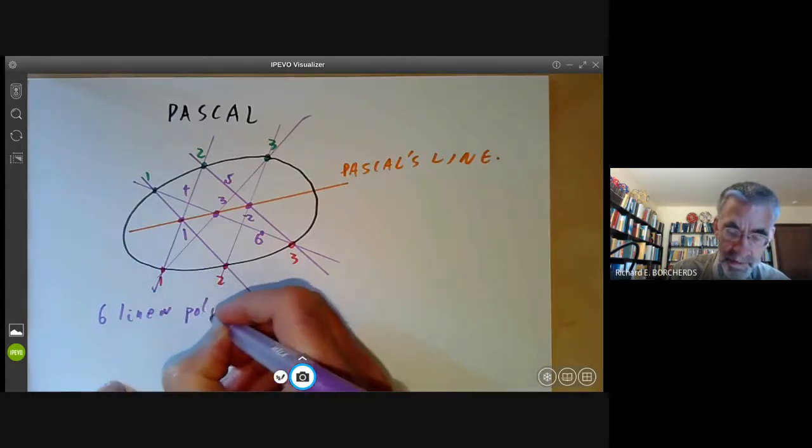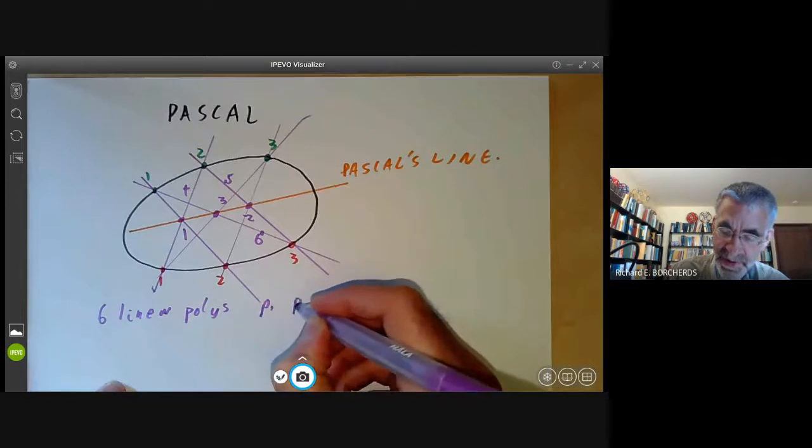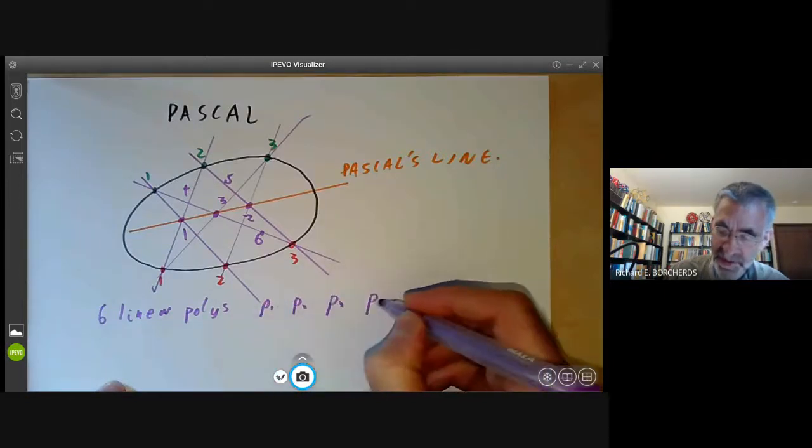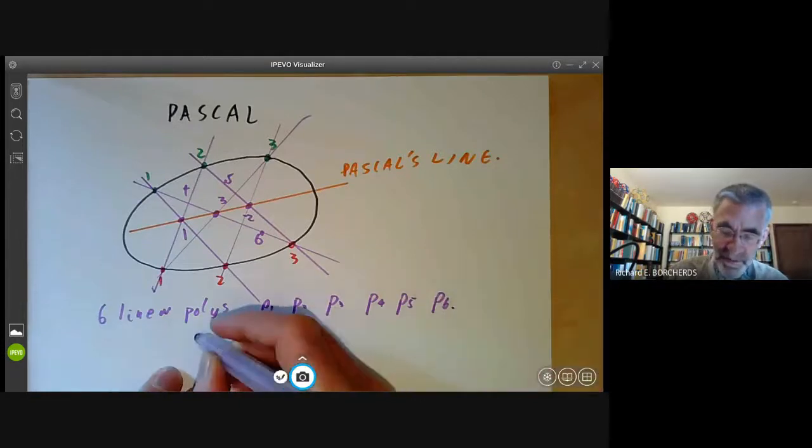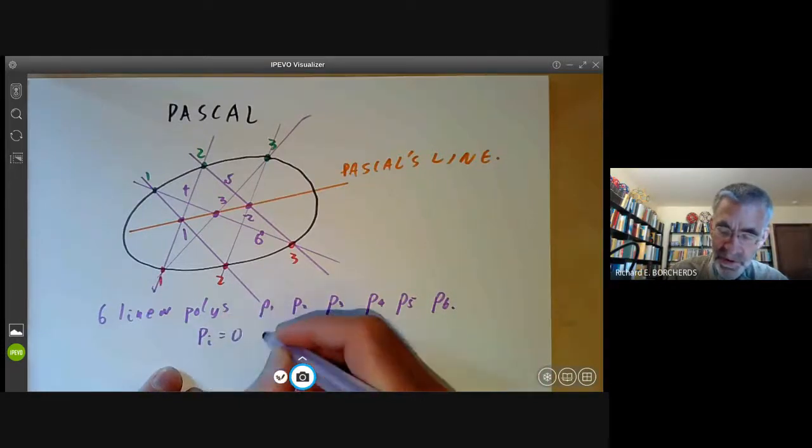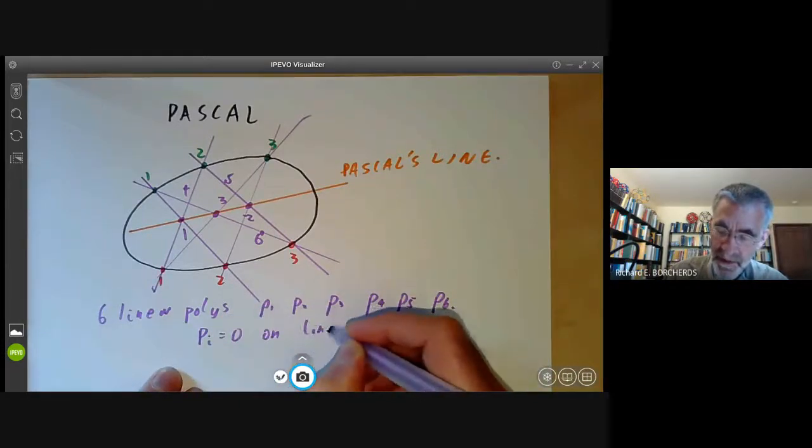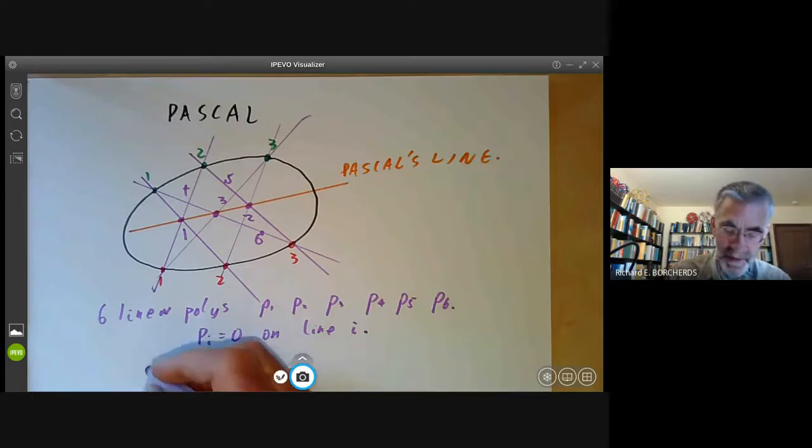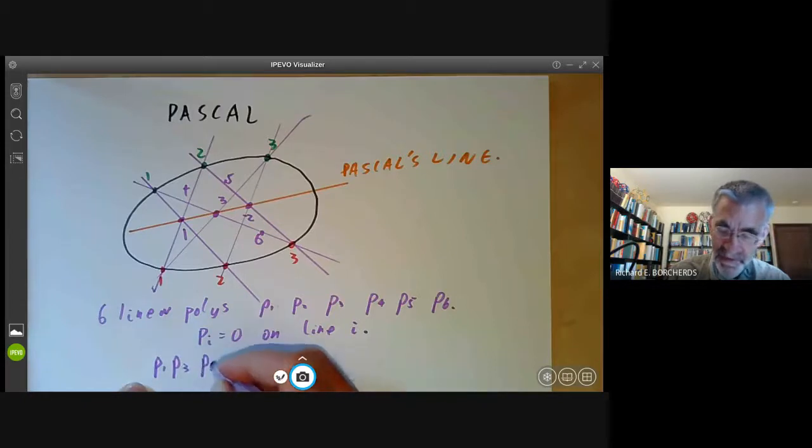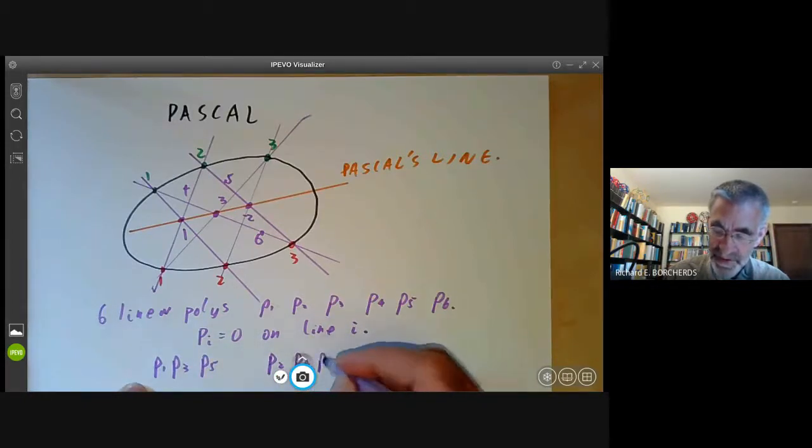Anyway, so we've got a hexagon and I'm now going to choose six linear polynomials. So we're going to choose the polynomials P1, P2, P3, P4, P5, P6, where Pi equals naught on line i. And now what I'm going to do is I'm going to look at the polynomial P1, P3, P5 and the polynomial P2, P4, P6.